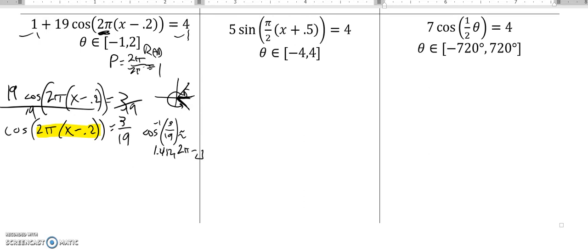So my two values that would give me a cosine of 3/19 would be 1.412, and let's see, 2π minus that, about 4.871.